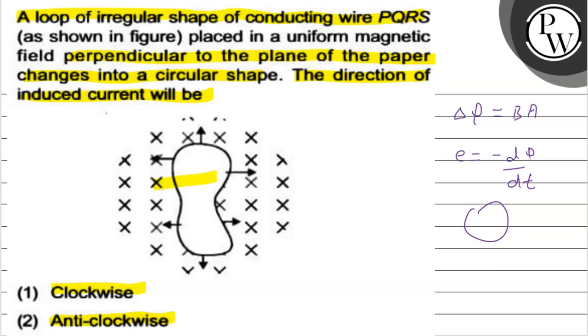And this is only possible when current flows in anti-clockwise direction. When current flows in anti-clockwise direction, it will behave like a north pole whose magnetic field will emerge in outward direction.